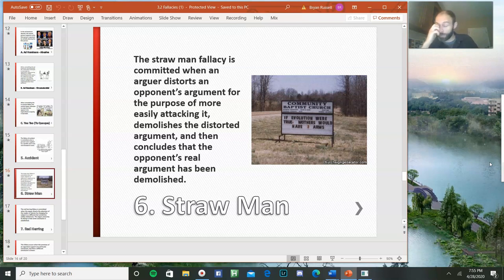So an example of that, this is not a real church sign, but imagine it were real, and it said, if evolution were true, mothers would have three arms. Mothers don't have three arms, therefore evolution is not true. The strategy here, why it's a straw man, is saying that people who believe in evolutionary theory are committed to the idea that mothers would have three arms, but of course no such thing. So then saying, well, that's not the case, mothers don't have three arms, therefore evolution is not the case. That would be committing the straw man fallacy.